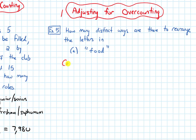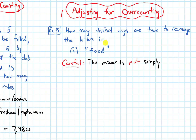I want to begin with being careful about something. The answer is not simply what we get if we count all the ways to rearrange four objects. Because there are four letters, the number of ways to rearrange four letters is 4 × 3 × 2 × 1, or 4 factorial. Multiplying that out, we get 24.